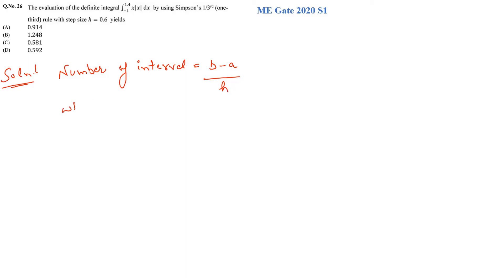Where b is upper limit and a is lower limit while h be the step size. So this is a way to determine the number of the intervals.